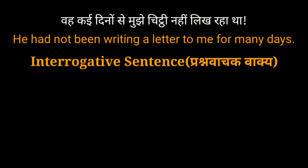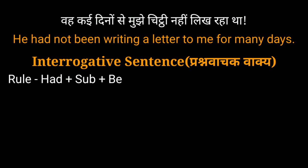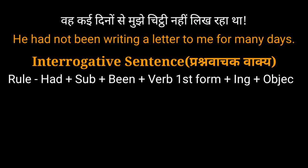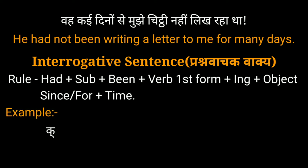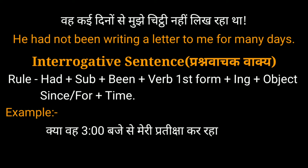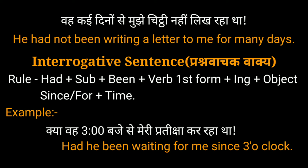Next are interrogative sentences — प्रश्नवाचक वाक्य. Formula: Had + subject + been + verb (first form + ing) + object + since/for + time. For example, क्या वह तीन बजे से मेरी प्रतीक्षा कर रहा था? — Had he been waiting for me since 3 o'clock? इसमें had been helping verb है, he subject है, waiting verb first form + ing है, मेरी object है, से के लिए since का प्रयोग किया गया है, तीन बजे time है.